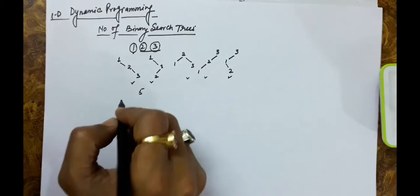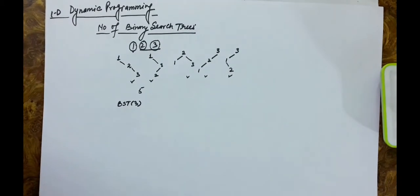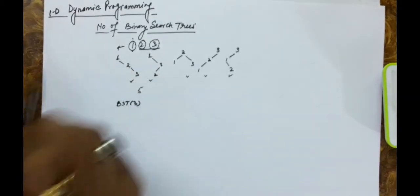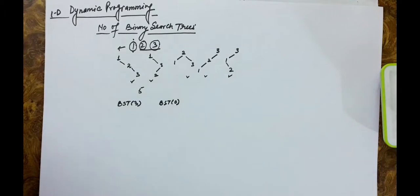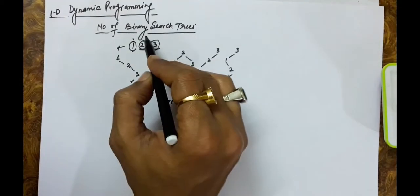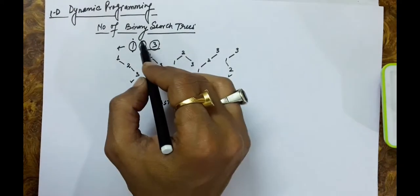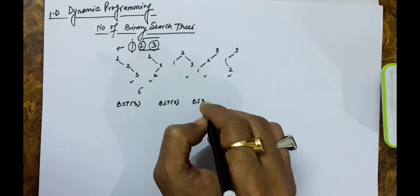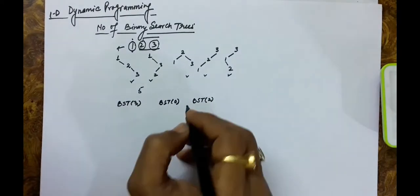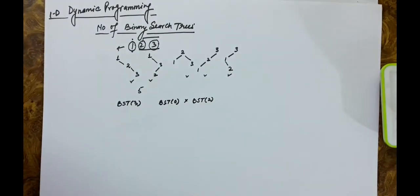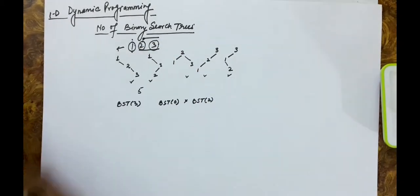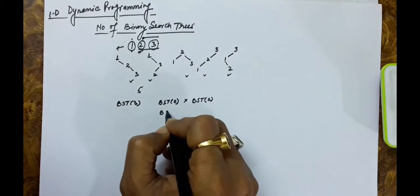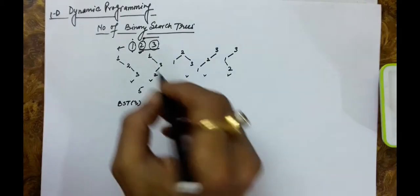We can say that BST(3) means the total number of trees possible with three keys. If we take the first key as the root, zero elements remain on the left, so the total trees possible on the left is BST(0), and two keys remain on the right giving BST(2). If we take the second key as root, one element is on each side, giving BST(1) * BST(1).